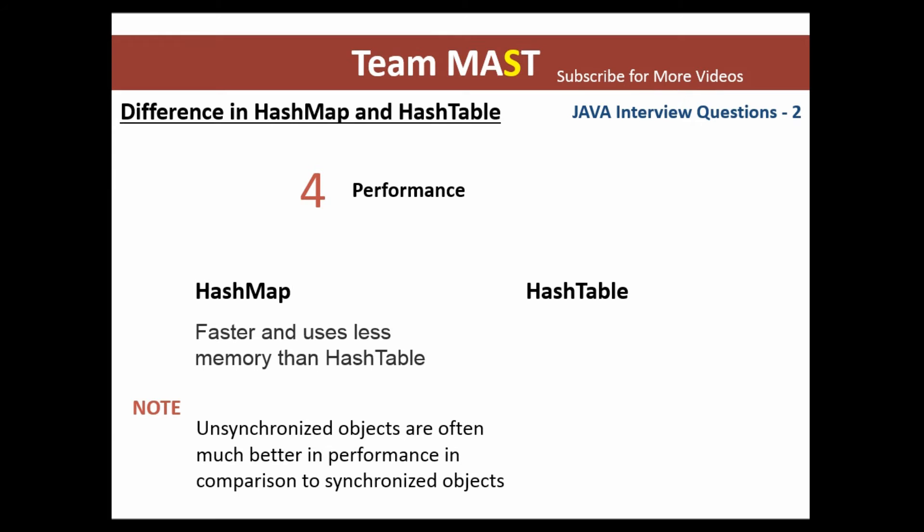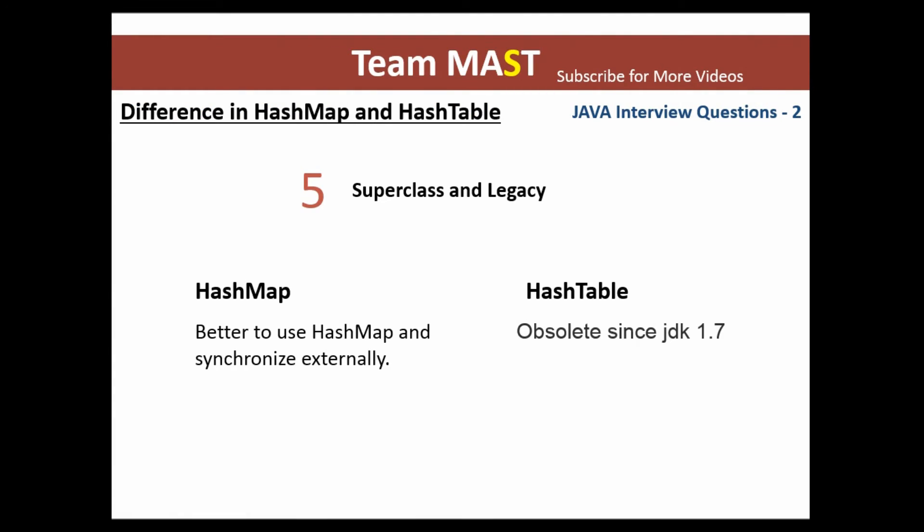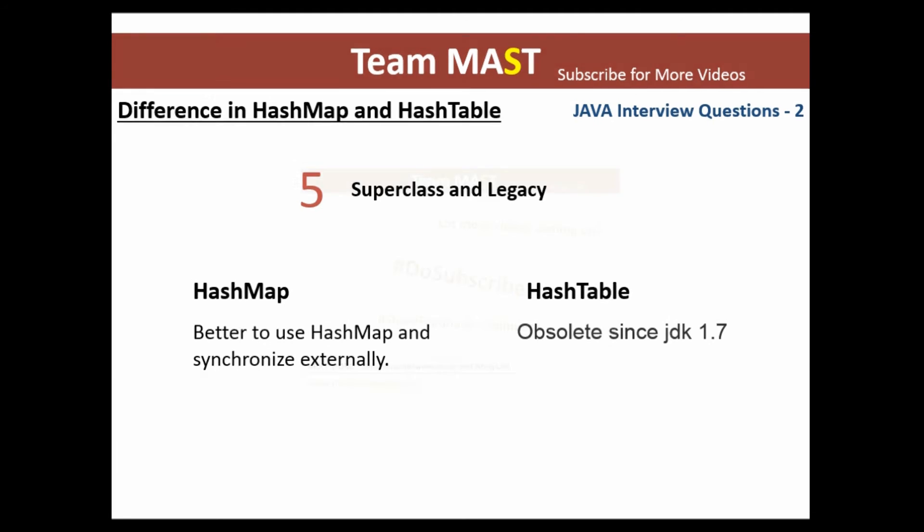The next difference is that it is better to use a HashMap and synchronize it externally, instead of using a Hashtable. Hashtable is also obsolete since JDK 1.7, so if your application is multi-threaded, it's better to use a HashMap and synchronize it externally.